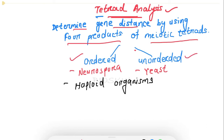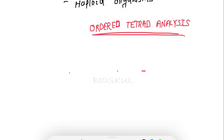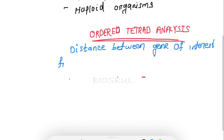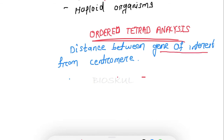In today's session we will focus on ordered tetrad analysis. I will make a separate video for unordered tetrad analysis. So let's know in detail about ordered tetrad analysis and why it is called ordered tetrad analysis. Ordered tetrad analysis is used to find out the distance between the gene of interest from the centromere. It is studied in Neurospora, which is a haploid organism.